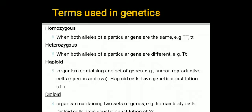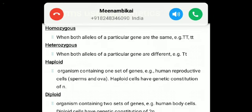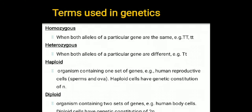The next terms are haploid and diploid. Haploid means the organism containing one set of gametes or genes — the genetic constitution is single n. For example, human reproductive cells, sperms and ova, are haploid. Diploid means the organism containing two sets of genes — the genetic constitution is 2n. For example, human body cells are diploid cells. These are all the terms used in genetics, which we should know before studying Mendel's experiments and other topics.